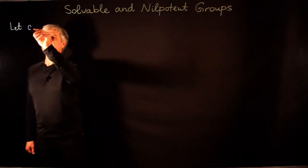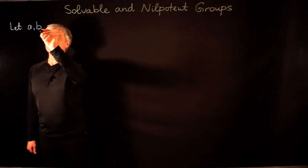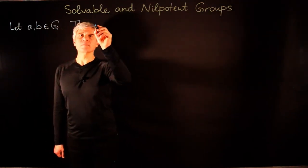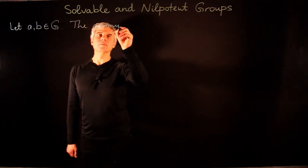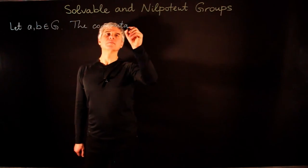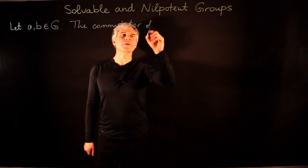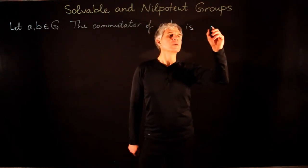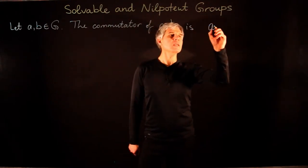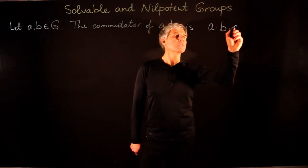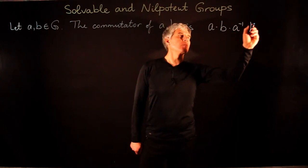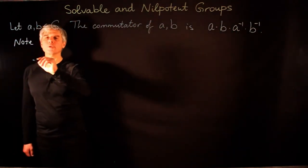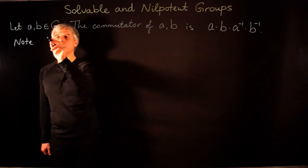Let A and B be two elements in the group G. The commutator of A and B is the following expression: it is A times B times A inverse times B inverse. We note that the inverse of a commutator is again a commutator.